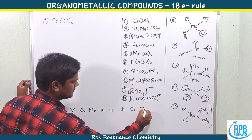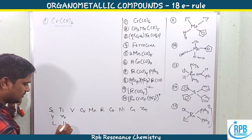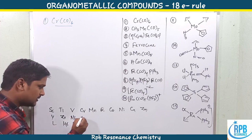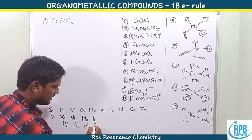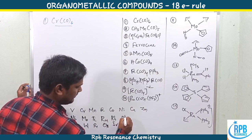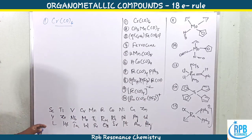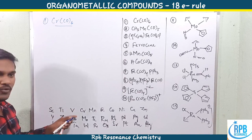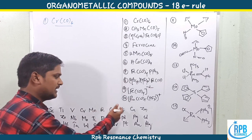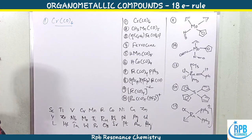cobalt, nickel, copper, zinc — these are the first row transition elements. The triads are: titanium-zirconium-hafnium, vanadium-niobium-tantalum, chromium-molybdenum-tungsten, manganese-technetium-rhenium, iron-ruthenium-osmium, cobalt-rhodium-iridium, nickel-palladium-platinum, copper-silver-gold, and zinc-cadmium-mercury.